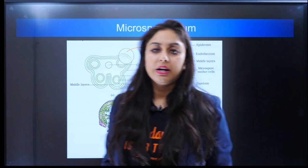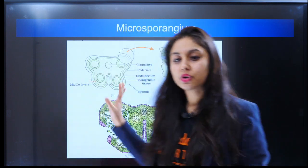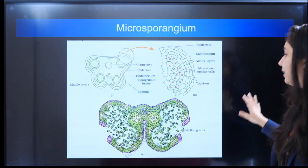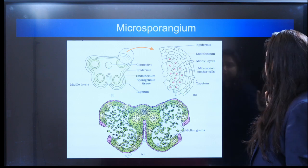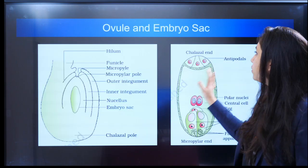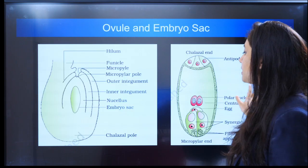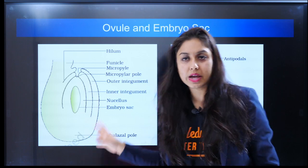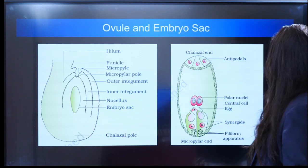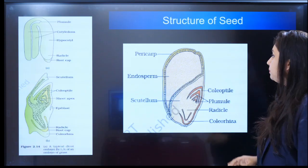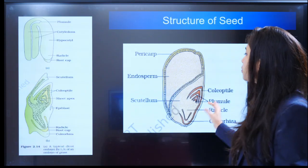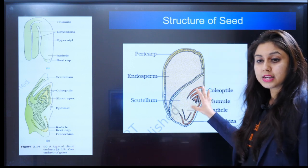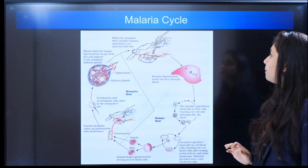Then you have to go through the botany. Microsporangium — you can just go through that, you can expect a question. Ovule and embryo sac — which one is the ovule, which one is the embryo sac — just go through that as well. Structure of the seed — you can expect a question from here also.